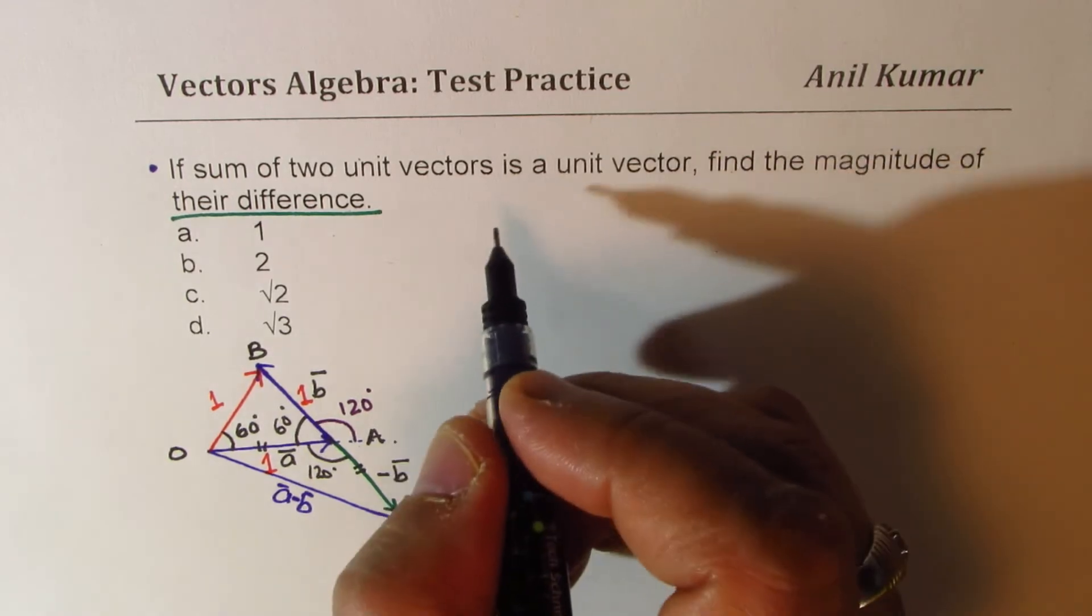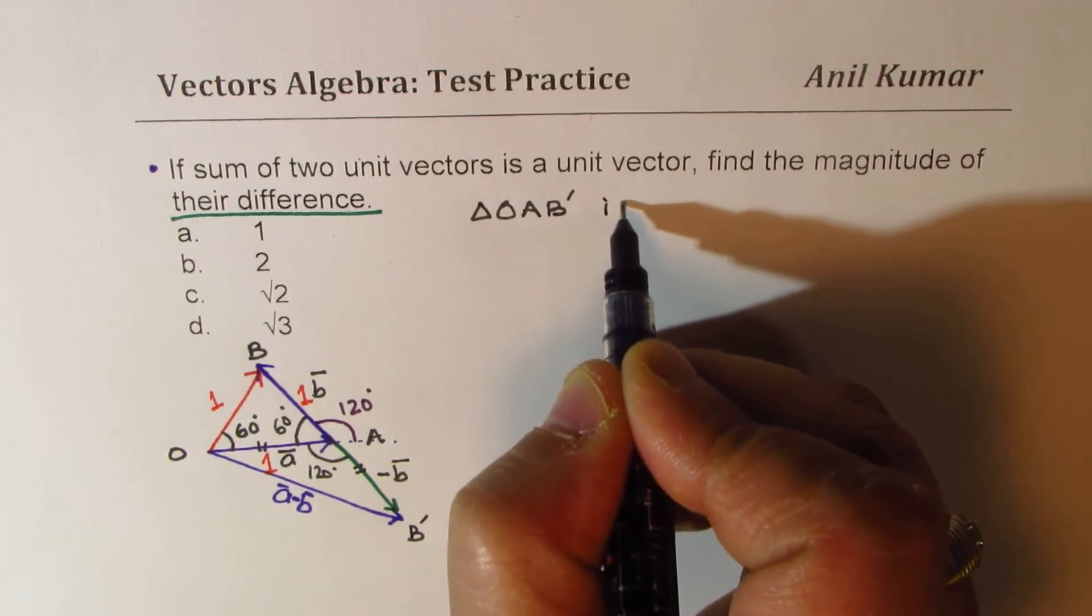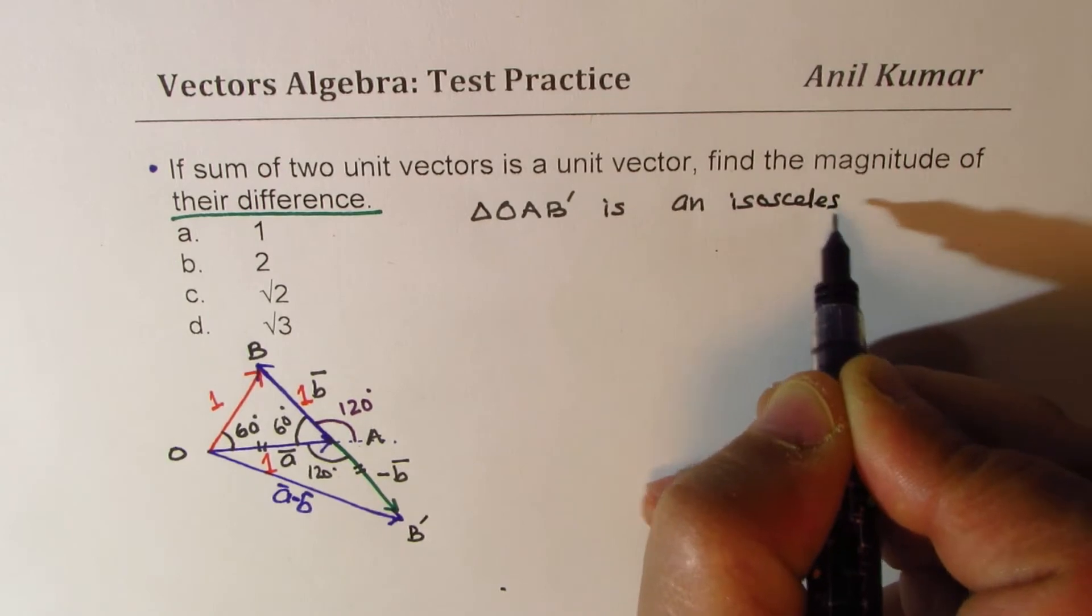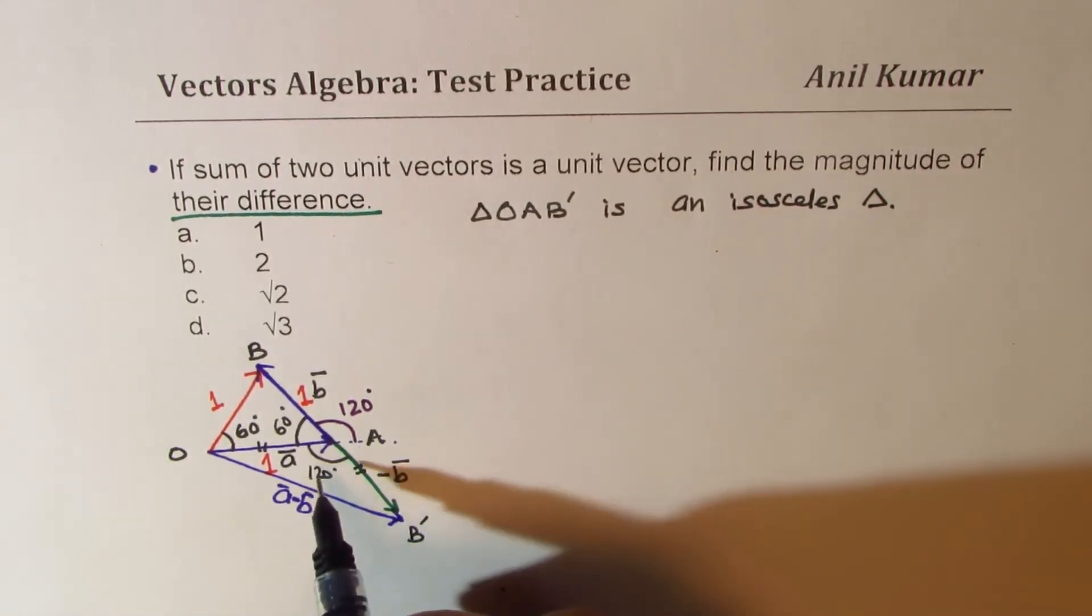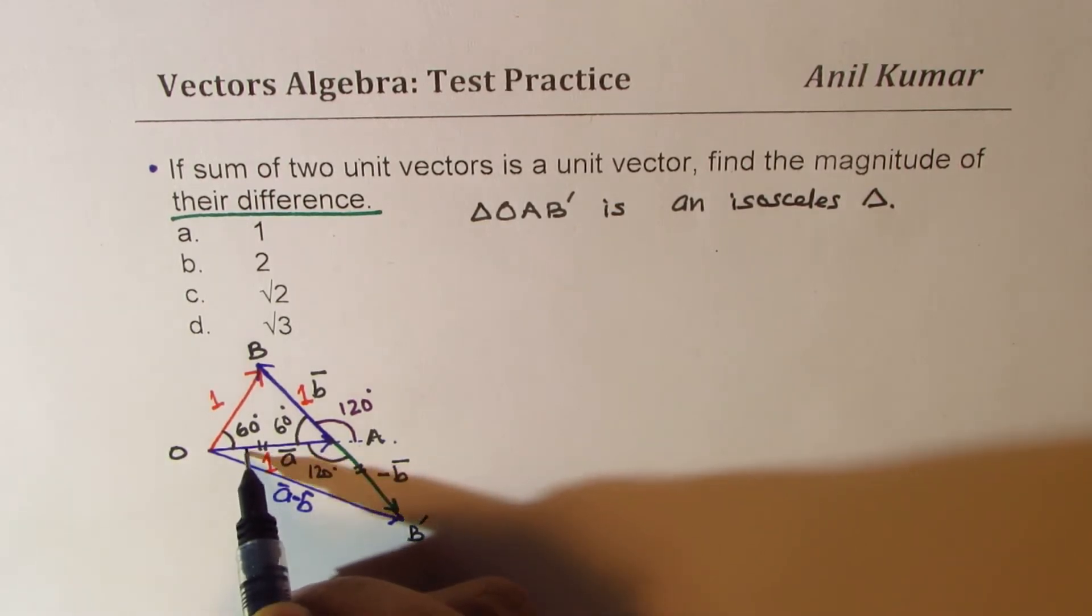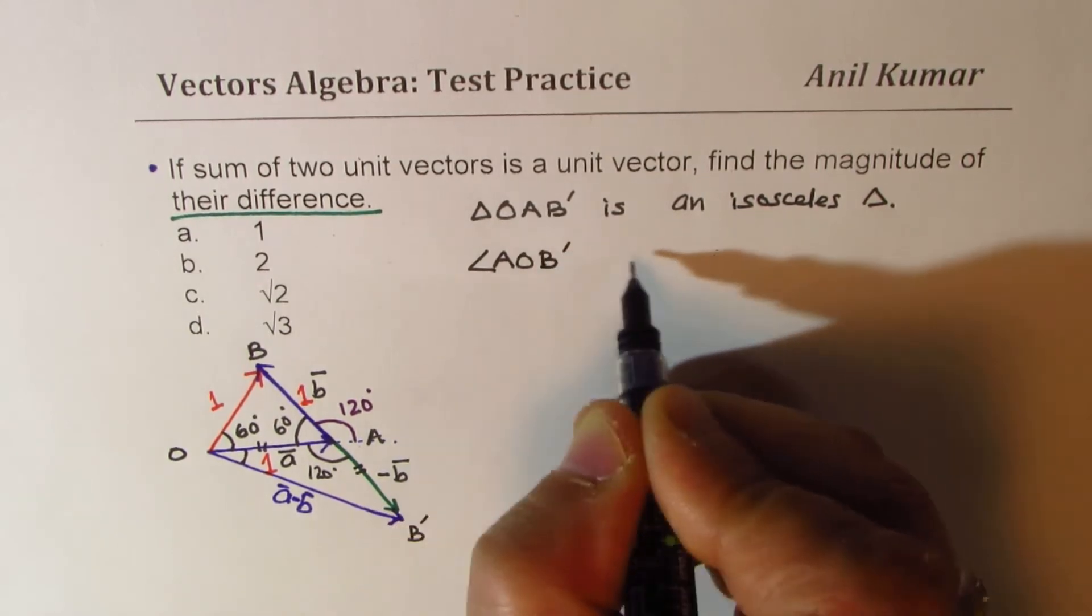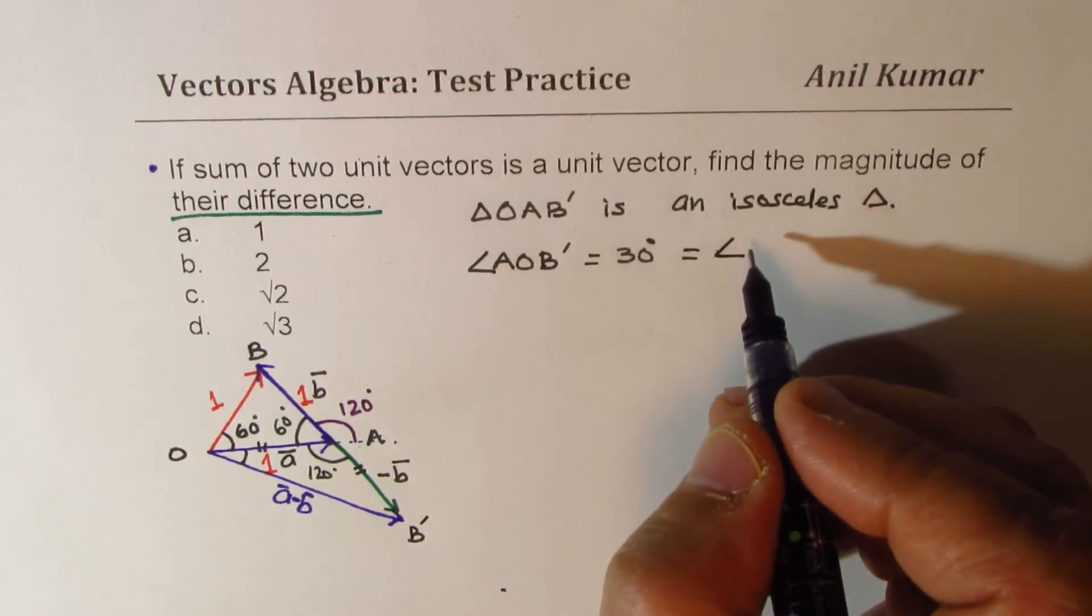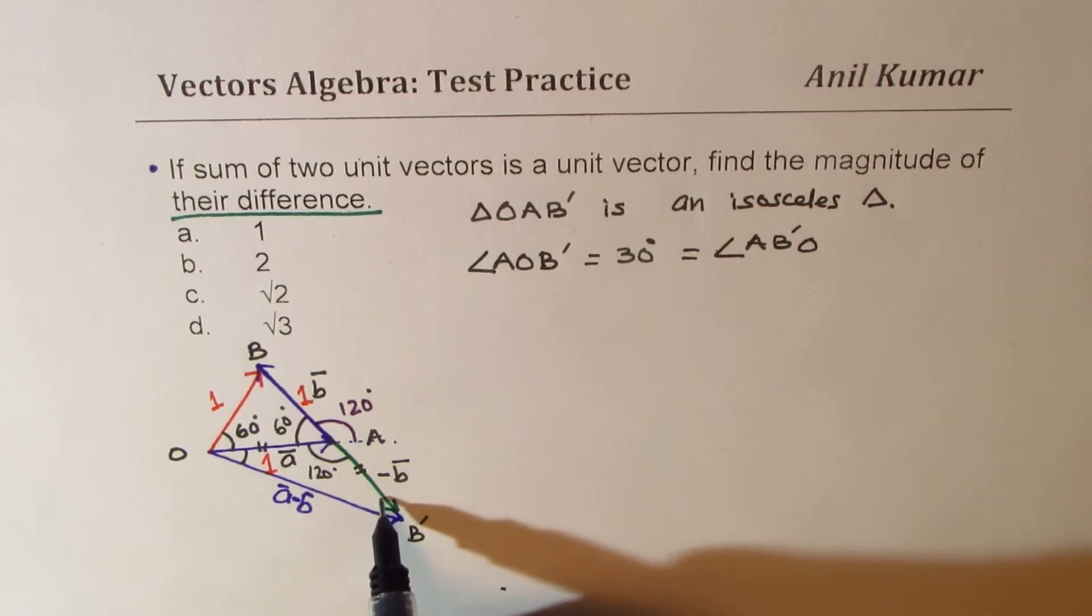Let's label this triangle. Let's say o, a, and this point is b, and this point is b dash. So what we find from here is that the triangle o, a, b dash is an isosceles triangle. In that case, the angle at these two sides, that is the angle a, o, b dash will be equal to 30 degrees and will also be equal to angle at a, b dash o. So both of them will be 30 degrees, so we have 120, 30, and 30.